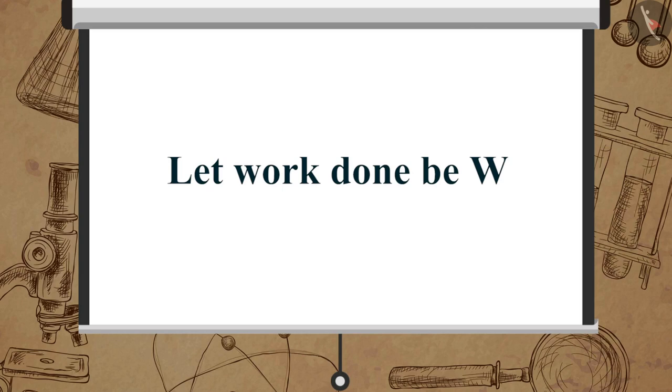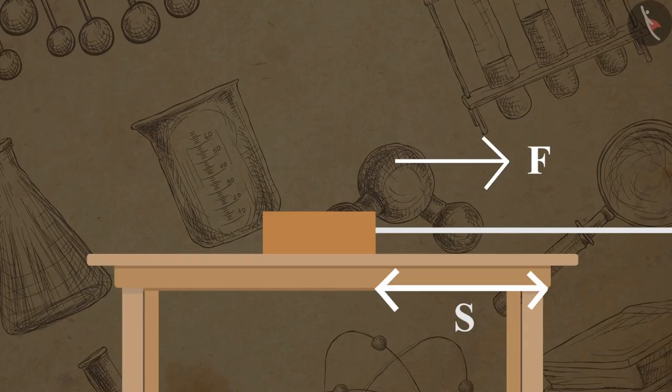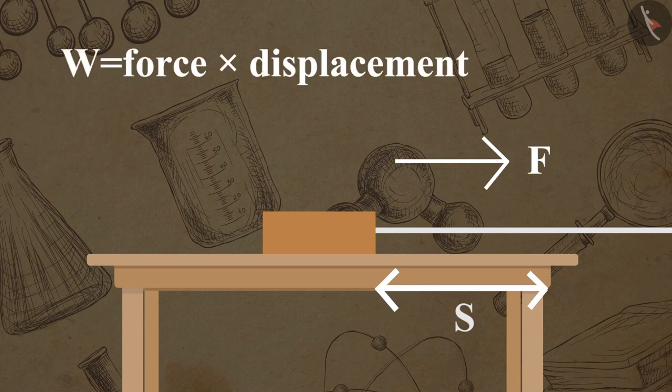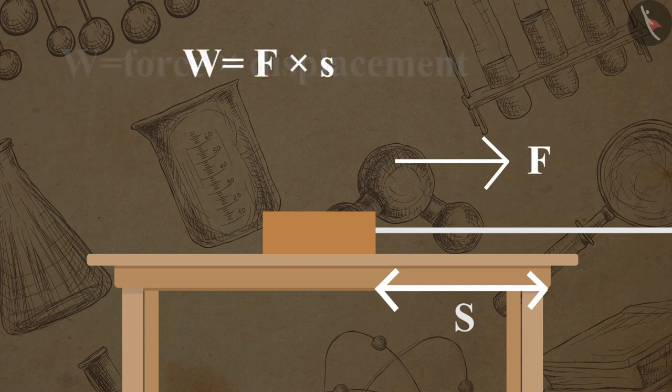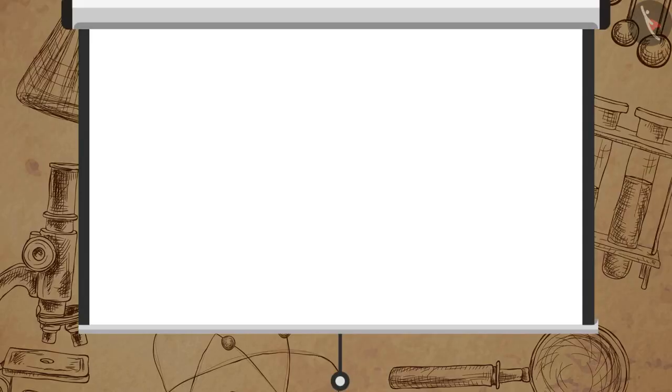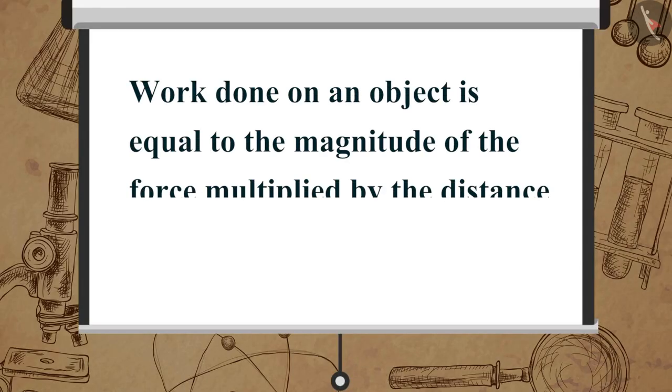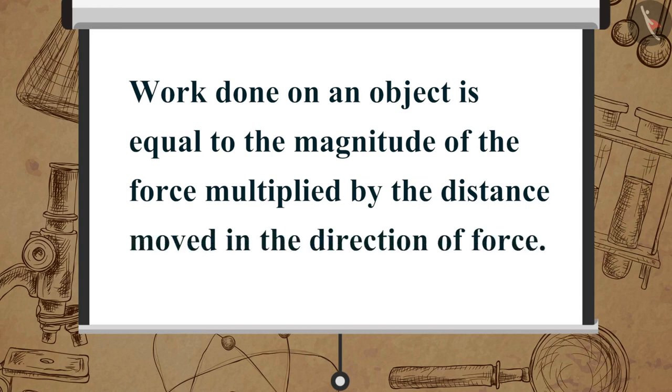Let the work done here be W. Here work done W is equal to force multiplied by displacement, which is equal to F multiplied by S. Therefore, work done on an object is equal to the magnitude of the force multiplied by the distance moved in the direction of force.